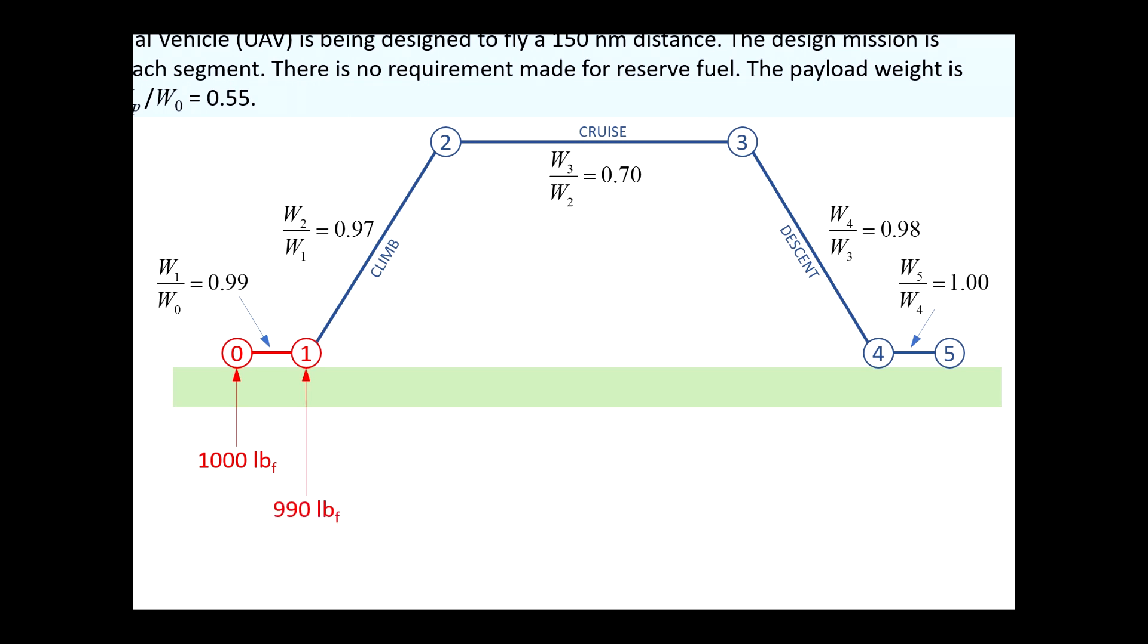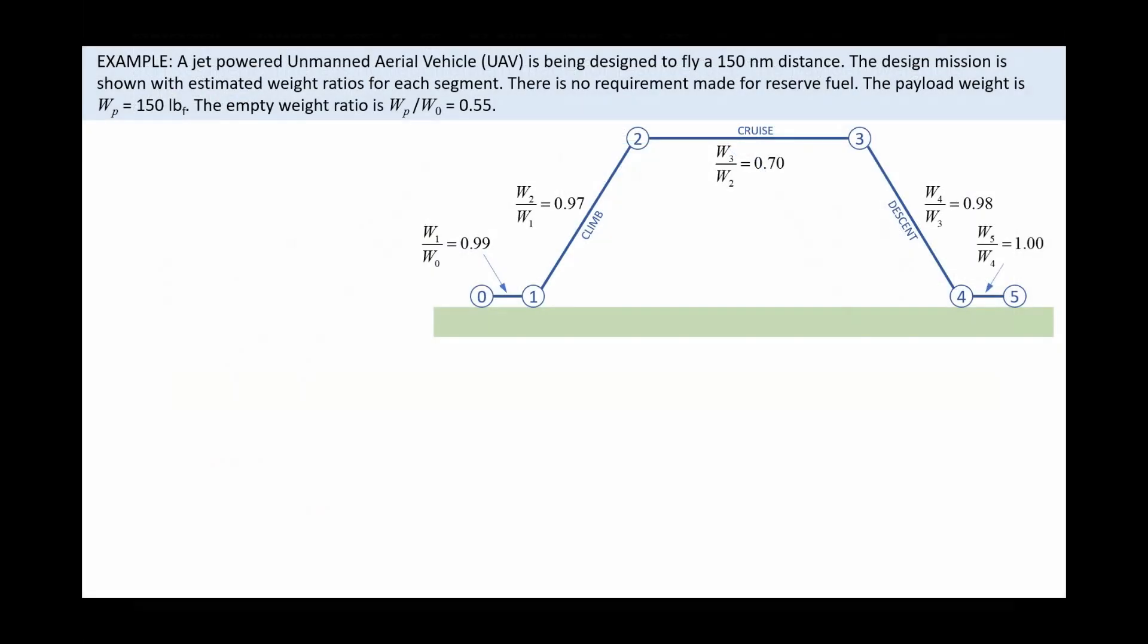This weight change is caused by fuel consumption, but could just as well be accompanied by additional weight being discharged from the airplane. For instance, a military aircraft dropping ordnance, a firefighting aircraft dropping fire retardant, or parachutists exiting the airplane.